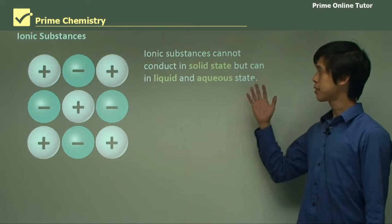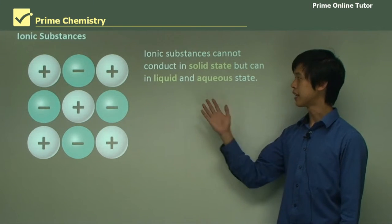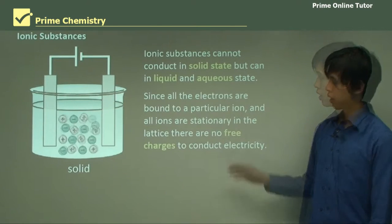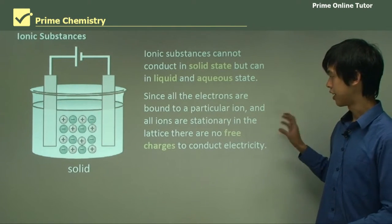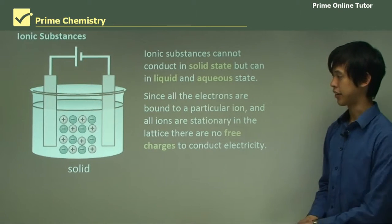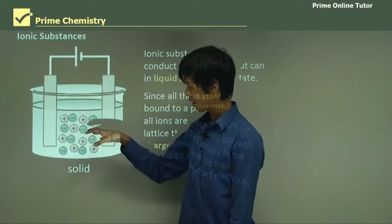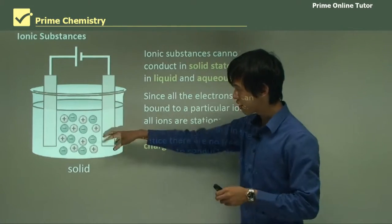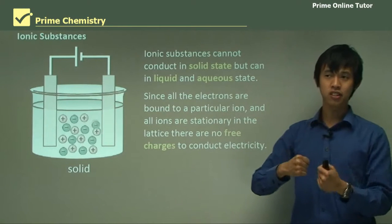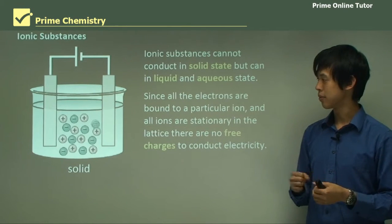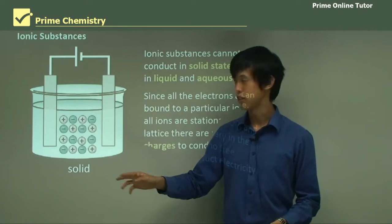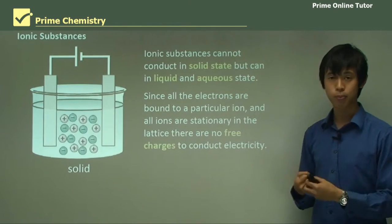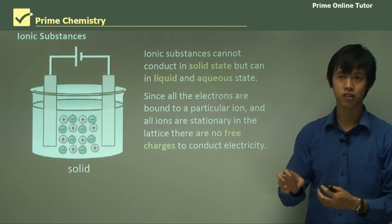Ionic substances cannot conduct in the solid state, but can conduct in liquid and aqueous states. Since all the electrons are bound in a particular ion and each of the ions is stationary, there are no free charges to conduct electricity. In the solid state, they're so tightly bound together that each ion is stuck — the positive ones try to move to the negative terminal and vice versa, but because they're so tightly bound, they can't move, so there's no flow of charge.